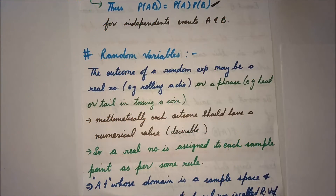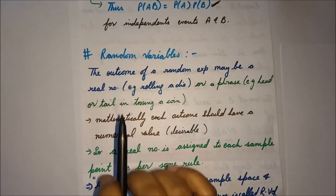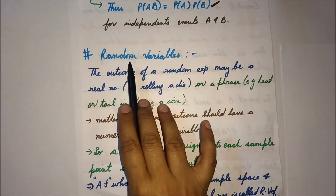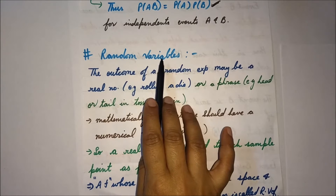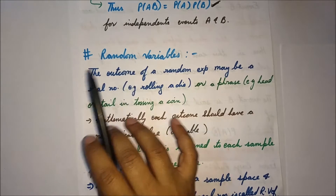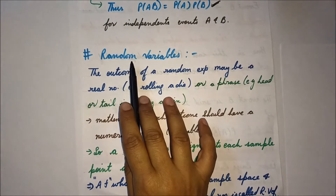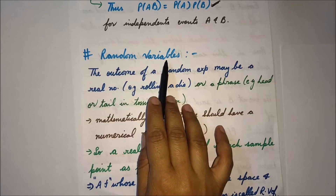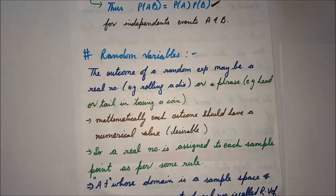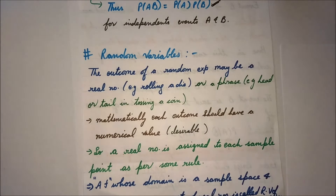Welcome to Smart Engineering Tutorials. Today we are going to see another topic of Unit 1, which is random variables. The name 'random variables' itself clarifies that 'random' means any value, any random value, and 'variable' means the values are different for every event. We are going to see how these random variables are used in our communication system.